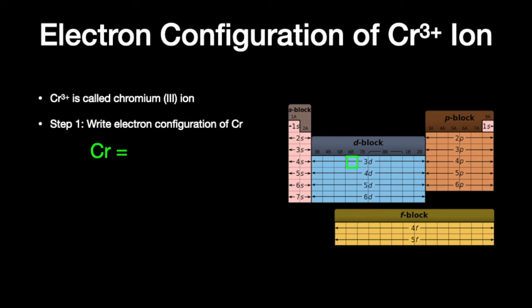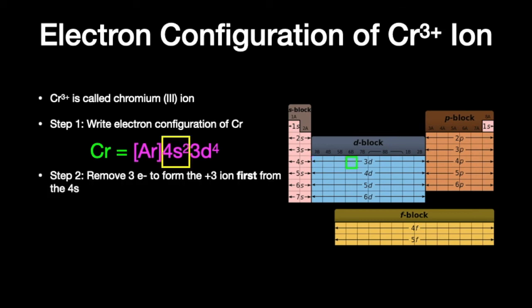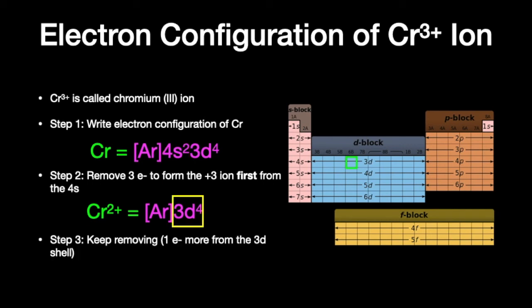Let's look at the Cr3+ ion — the chromium 3 ion. Using abbreviated electron configurations, we start by building off of argon, then add 4s2, then 3d4. Remember that d orbitals are one principal quantum number behind the 4. So the neutral chromium atom has that electron configuration. To form the plus 3 ion, we remove three electrons: first the two electrons from the 4s subshell (giving us the plus 2 ion), then one more electron, giving us the chromium 3 ion with configuration [Ar]3d3.